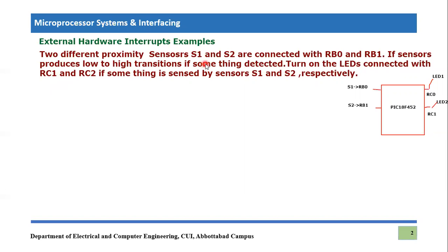We are given this statement: two different proximity sensors S1 and S2 are connected with RB0 and RB1. Remember RB0 and RB1 are the two pins of the microcontroller used as external hardware interrupt zero and interrupt one pins. If the sensors produce low to high transitions — meaning if a sensor detects something it goes from low to high — a low-to-high transition will be produced.